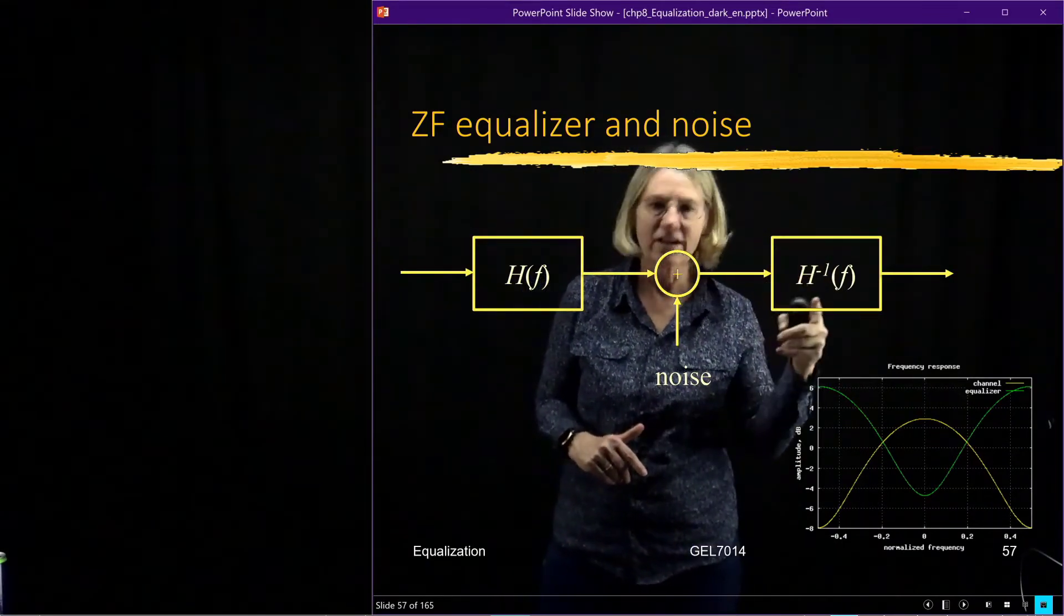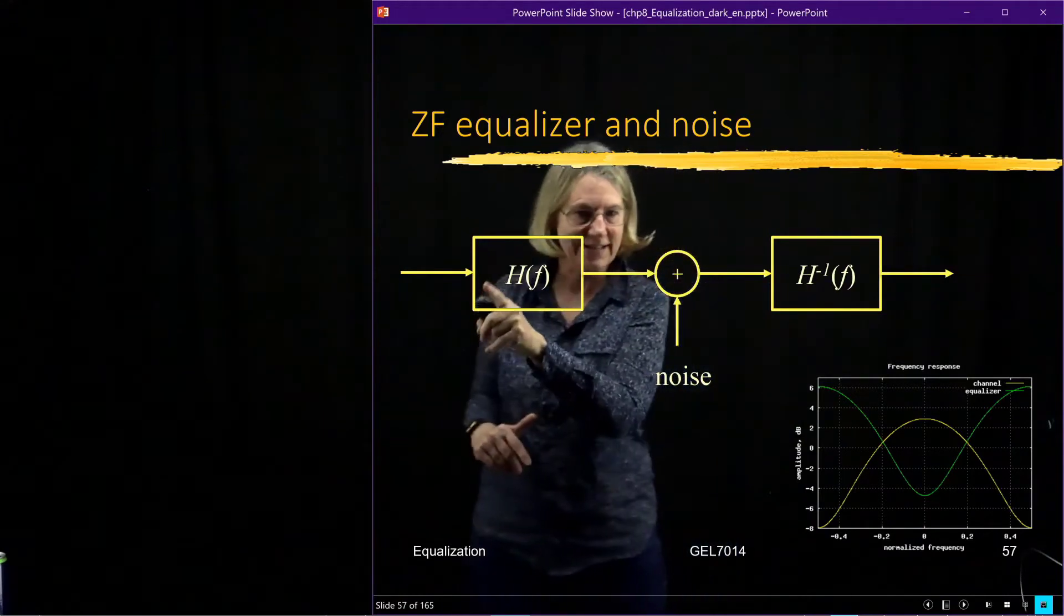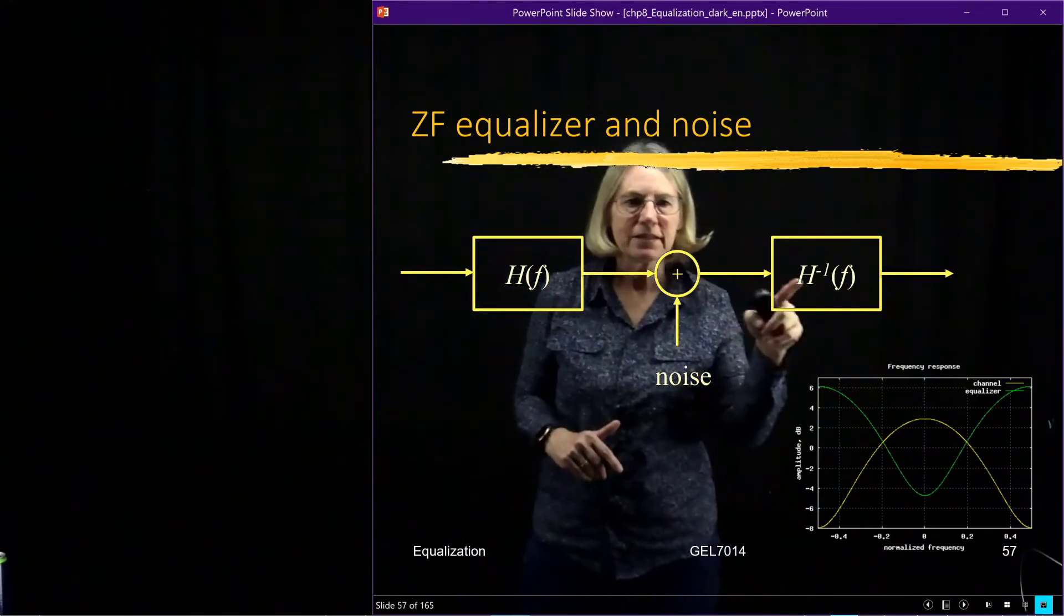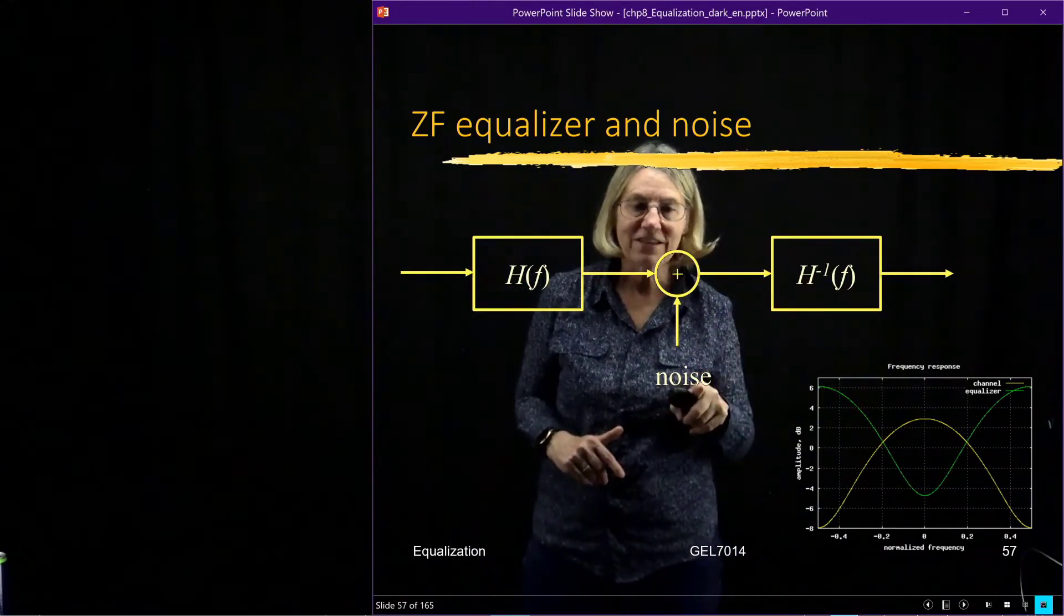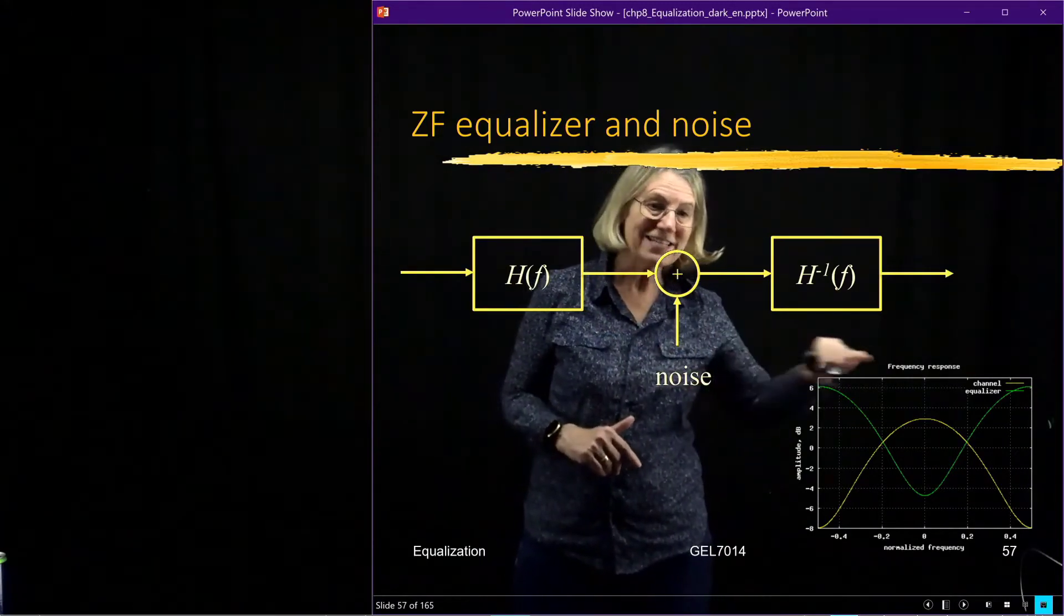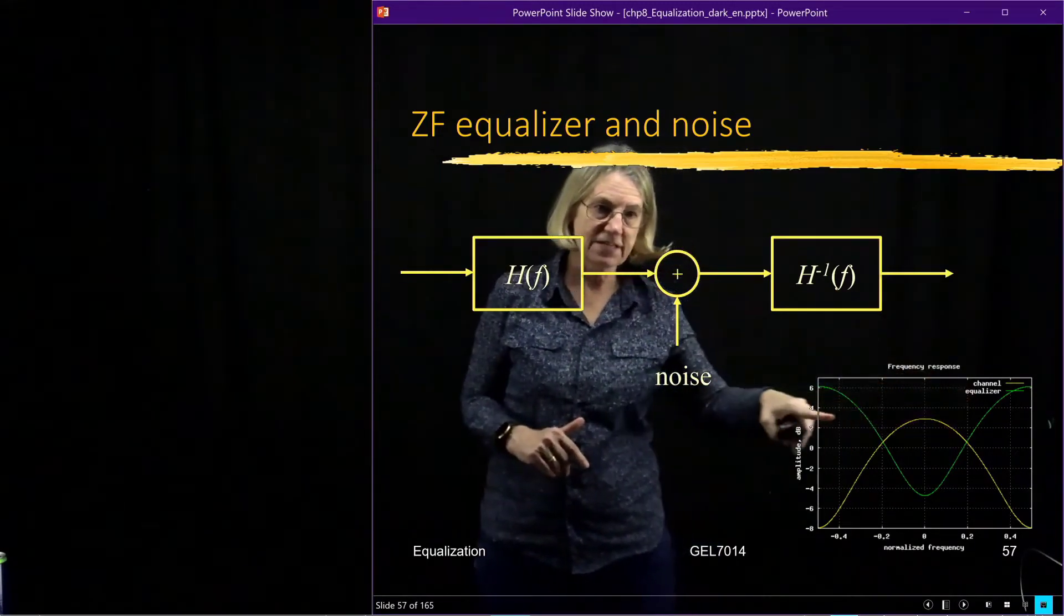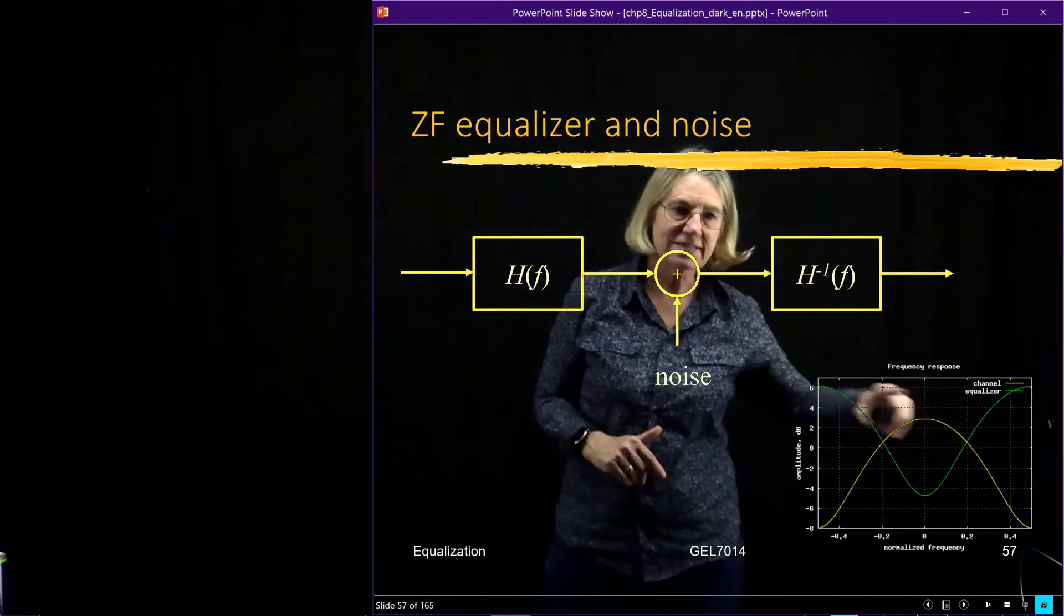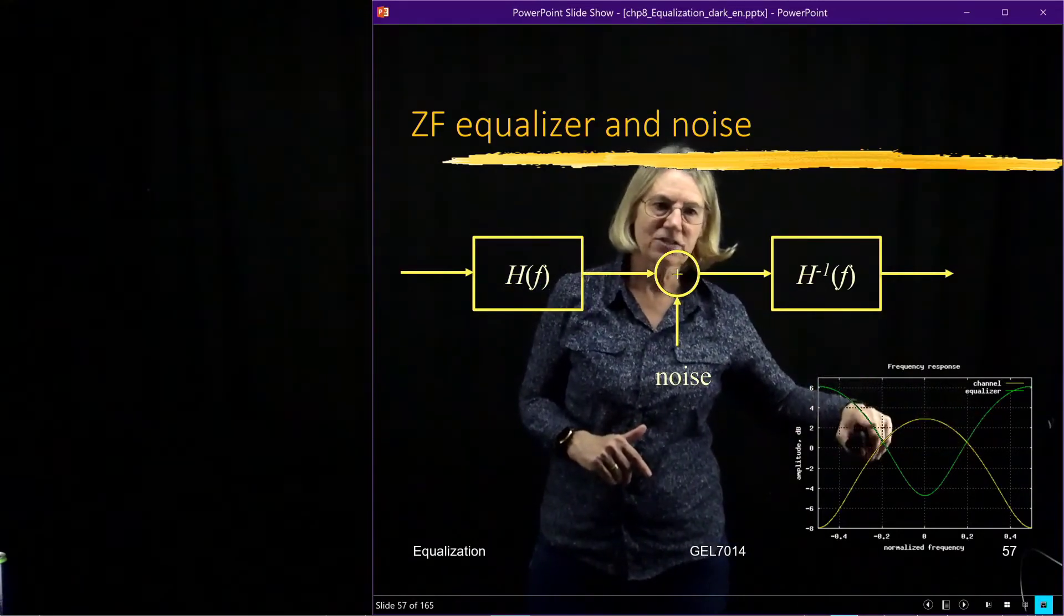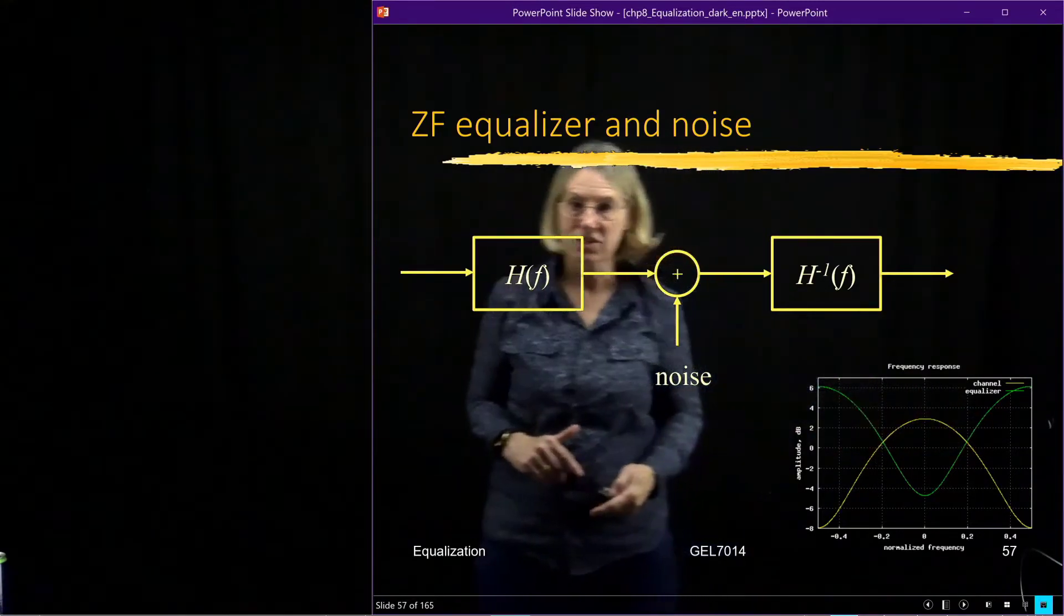Zero forcing would be just the exact inverse of this channel, but this inverse is now acting on the noise. So if the noise was flat to begin with at the top of this yellow curve, we can see that we're adding on to it in certain sections.